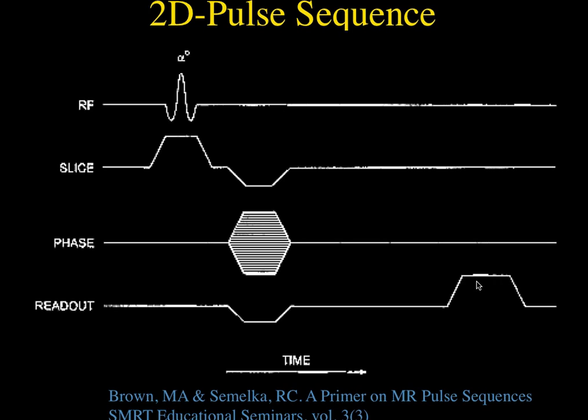Using standard spin echo imaging — which we don't use anymore — you'd fill one line of k-space with every 90-degree pulse, and you do a 90-degree pulse every TR. The scan time would be TR times however many phase encodings you use. That's called one NEX. If you want more signal to noise you can do it again and average them — that's called two NEX, which doubles the time but only improves the signal-to-noise by the square root of two, roughly a 40 percent improvement.